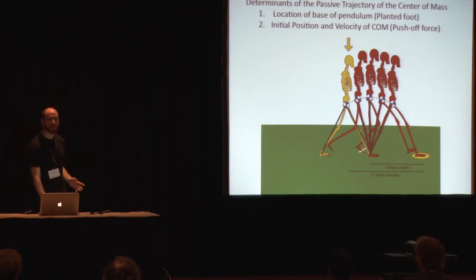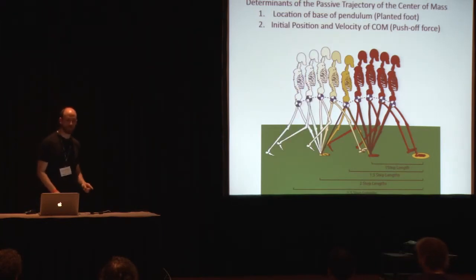In one and a half step length condition, you may be a little bit better off, you may be able to start tailoring the push off force, but it's not until you have two or more step lengths of visual information that you can start to take control over the things that are going to determine the passive trajectory of your center of mass during the step.